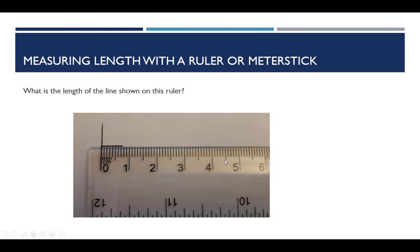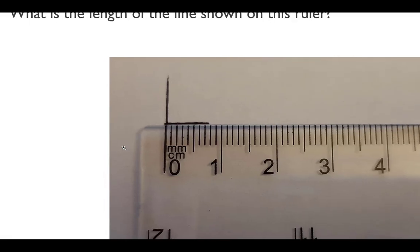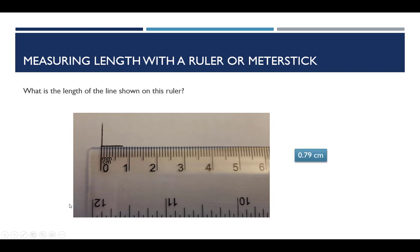Same ruler, so we're still going to go to the hundredths place. Let's blow this up a bit. So it's between 0 and 1 — definitely going to begin with zero point something. Here is 0.5, 0.6, 0.7. We're not quite at 0.8, so it's definitely going to begin with 0.7. And since it's almost at the end, I would say 0.79 centimeters — so that's what I would record: 0.79 centimeters.